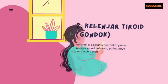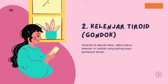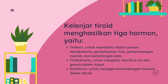Kelenjar tiroid atau gondok terletak di leher dekat dengan jakun. Kelenjar ini adalah paling kaya pembuluh darah. Kelenjar tiroid menghasilkan tiga hormon yaitu tiroksin, triiodotironin, dan kalsitonin.